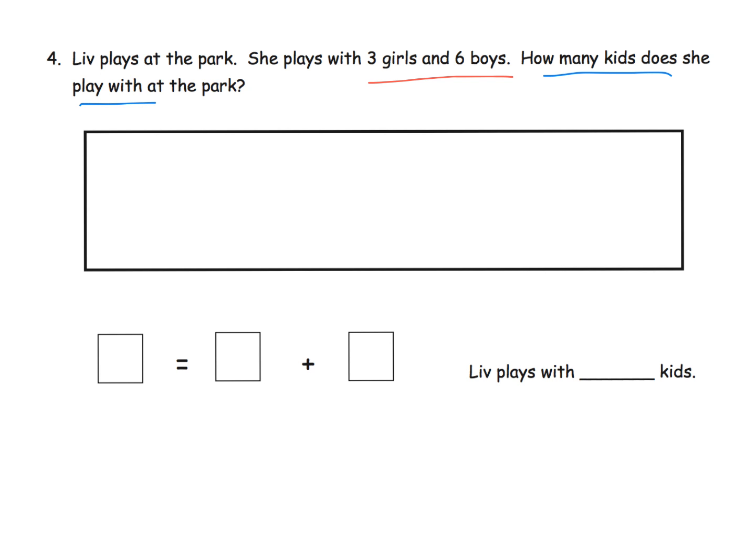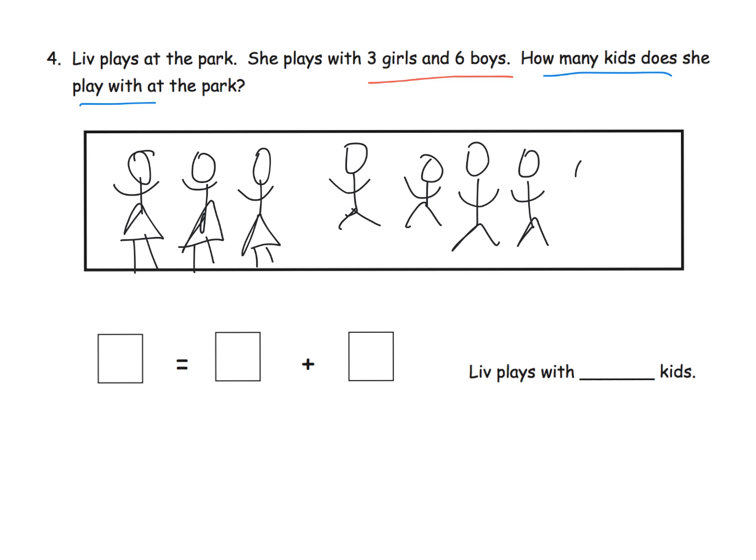We're supposed to draw that picture. So parents and teachers, it's not an art contest, but let our students draw the picture to represent the story that they've just been given. So there's our three girls, and then here's our six boys. Oh, gee whiz. Some of my boys are tall, and some of them are short. One, two, three, four, five, and here's six. All right, so there's my three girls, six boys.